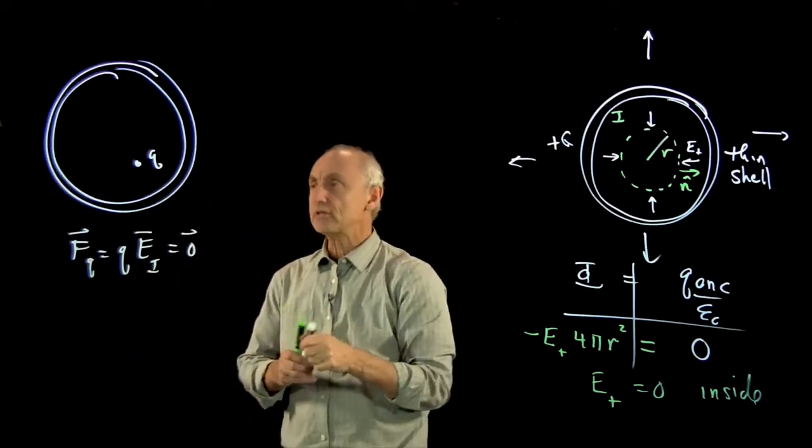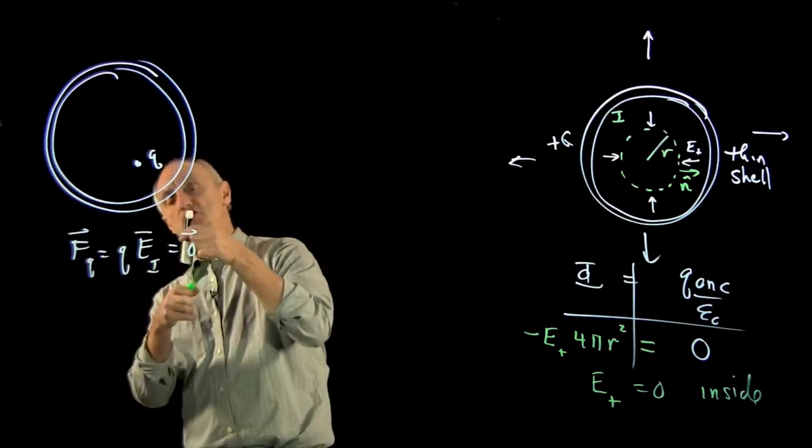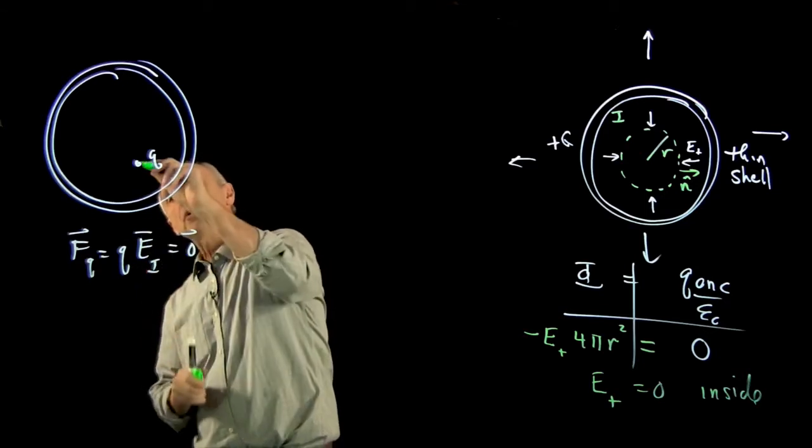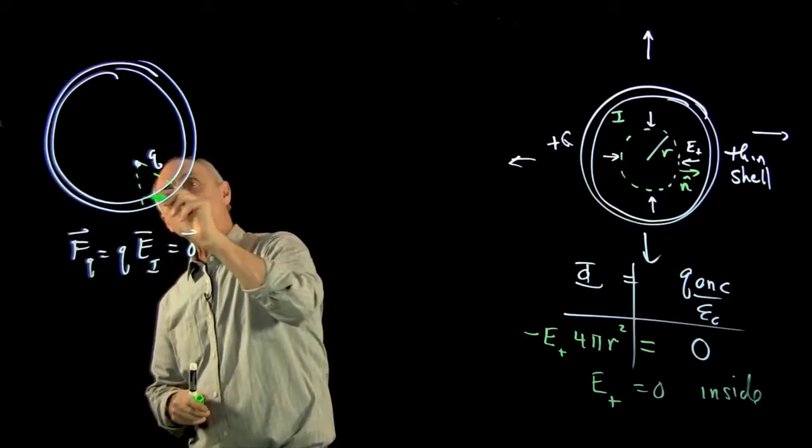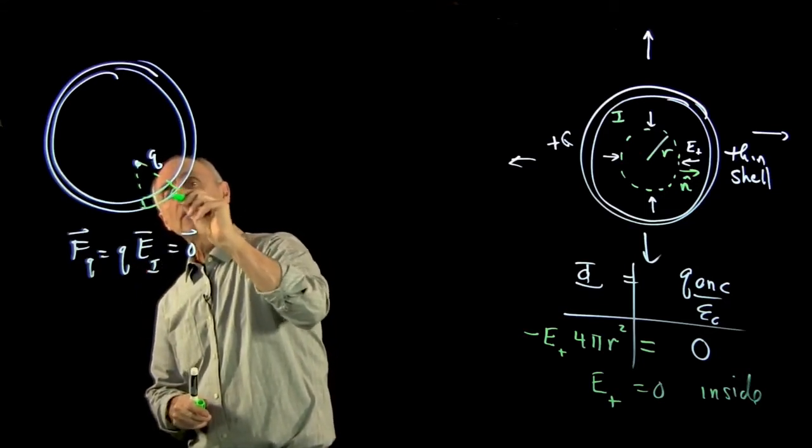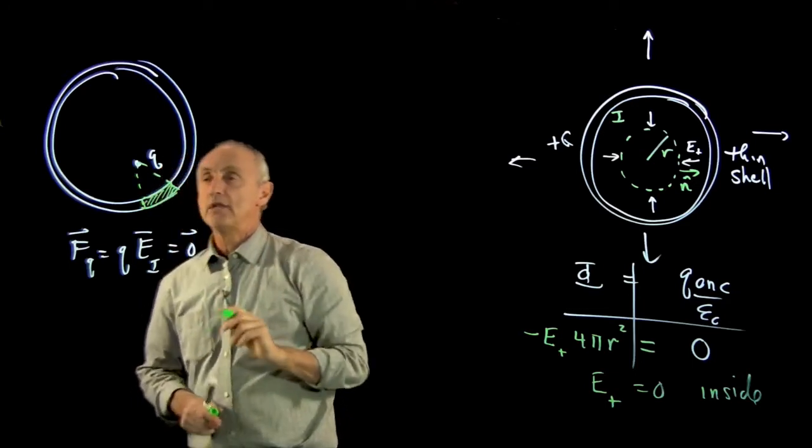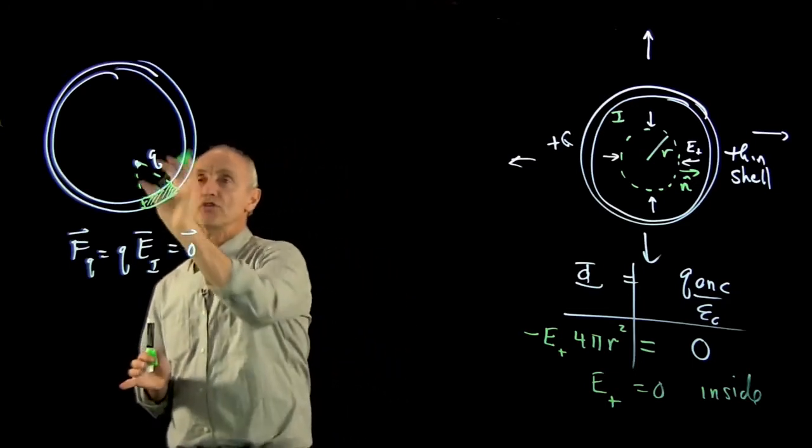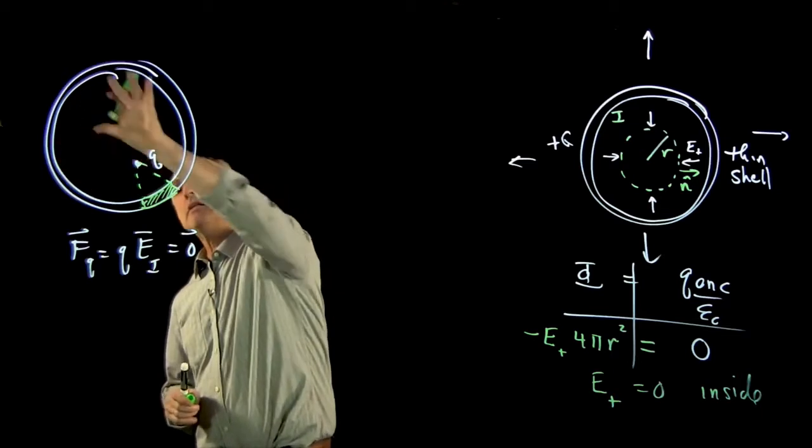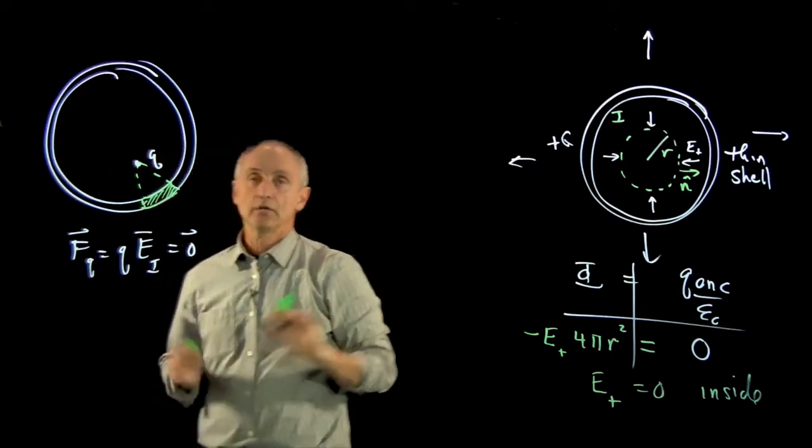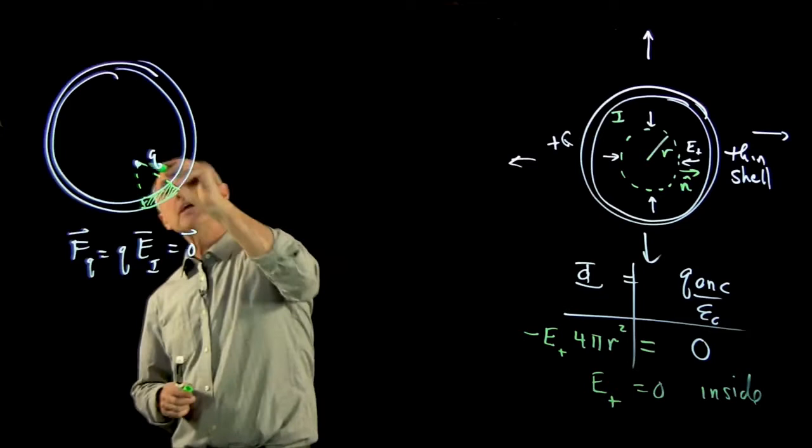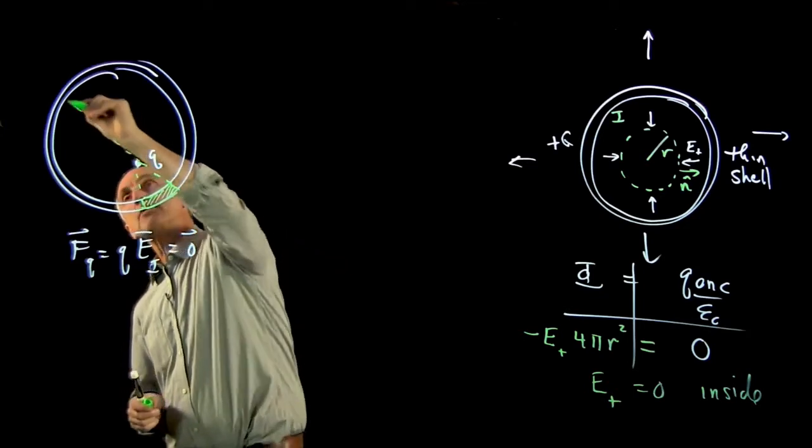But that seems very counterintuitive, because isn't this charge closer to a lot of charge on the shell over here, and so that positive charge should exert a force on this, and since it's closer here, well, shouldn't that be a non-zero force? But if you think about it, let's just look at this.